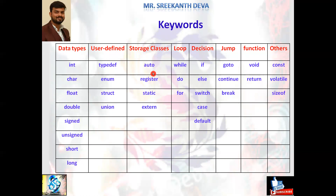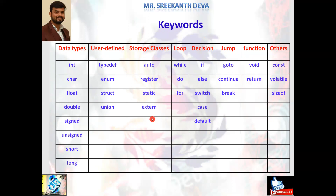Some keywords are used in storage classes like auto, register, static, and extern. Some keywords are used in looping or iteration statements like while, do-while, and for. Some keywords are used in conditional and selection statements like if, else, switch, case, and default. Some keywords are used in jump statements like goto, continue, and break — these are flow controls of C programming. Some keywords are used in functions like void and return. Other keywords include const, volatile, and sizeof.